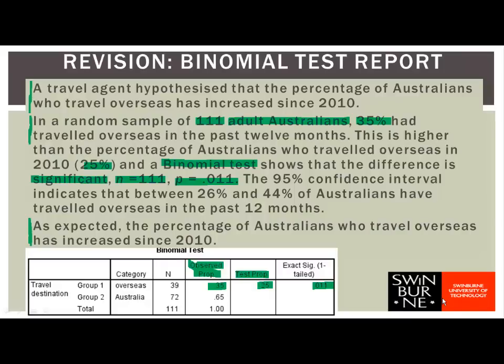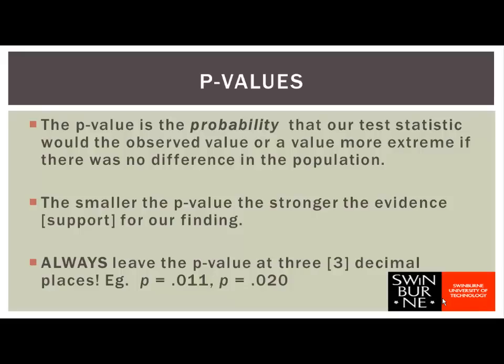So this week we're going to be looking at the theory behind significance testing — not just the binomial test and the one-sample t-test, but all of the significance tests we're going to be looking at. A p-value is a probability: it's the probability that if there was no difference in the population, we'd get a test statistic as extreme as the one we've observed. The smaller the p-value, the less likely we'd be to see our particular sample if there was no difference in the population, so the stronger the evidence that there's a difference.